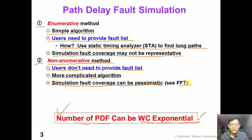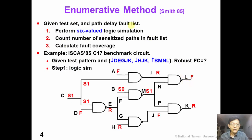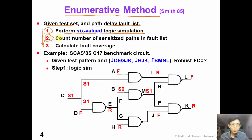Now let's introduce the enumerative method. Given a test set and a path-delay-fault list, the enumerative method simply performs three steps to calculate the fault coverage. Step 1: perform six-value logic simulation. Step 2: count the number of sensitized paths in the fault list. Step 3: calculate the fault coverage.